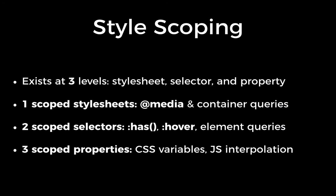So what is style scoping? Style scoping exists at three levels: scoped style sheets, scoped selectors, and scoped properties. Level one style scoping is similar to how media queries wrap an entire style sheet — a conditional or scoped style sheet. Another application of this is container queries, which are responsive breakpoints set on the width of an element that affect the element and its children.